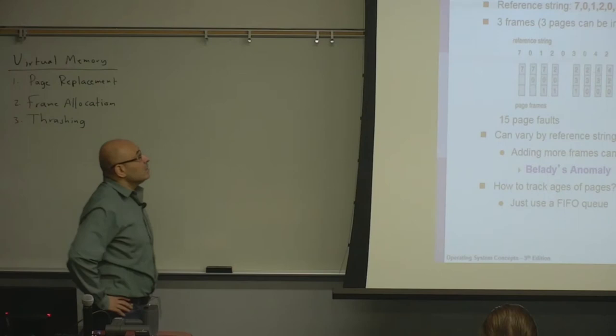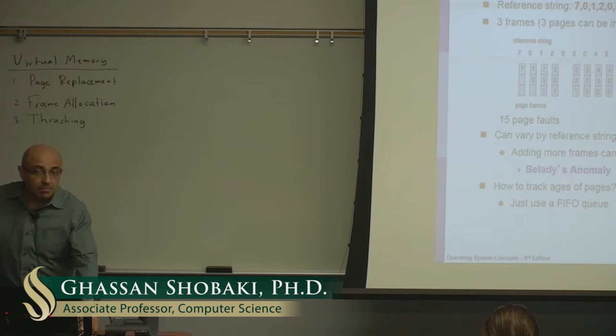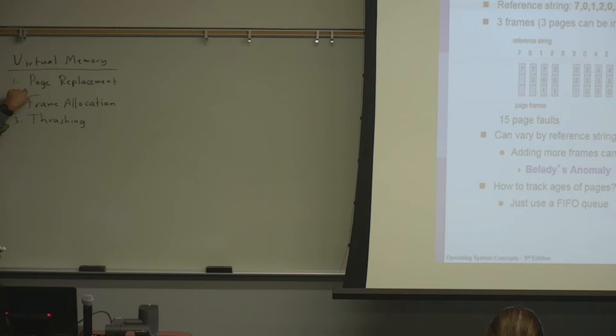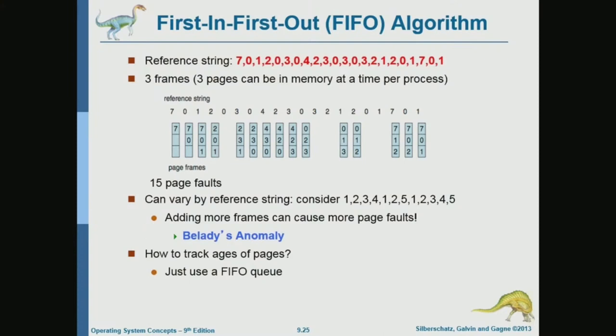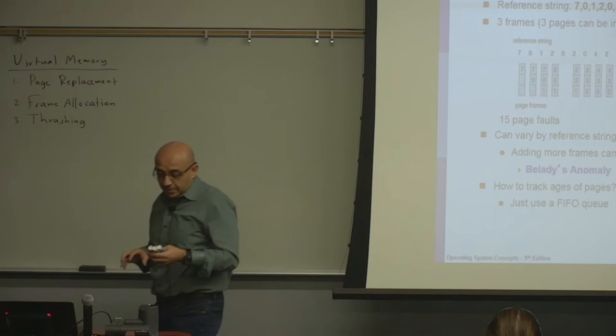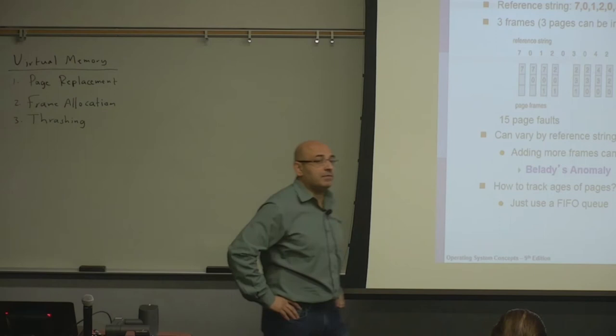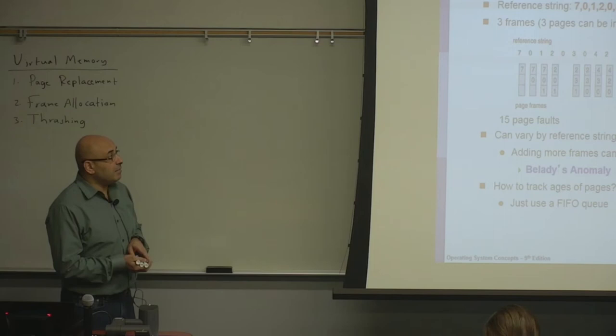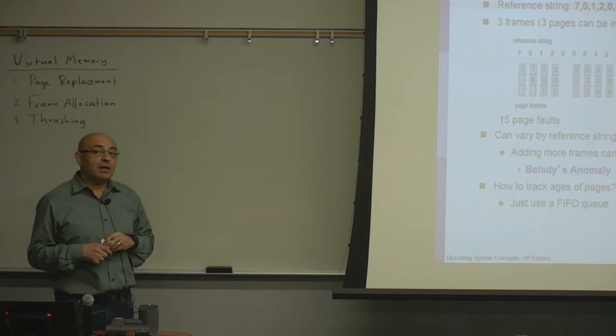Today we'll continue our discussion of virtual memory. The three main concepts in today's lecture are going to be page replacement, which is something we started last time, frame allocation, and thrash. Last time we talked about page replacement. When does the operating system need to do page replacement? When there are no free frames. Not every page fault will result in page replacement — we only need page replacement if there are no free frames.